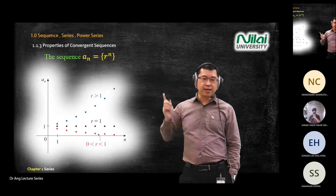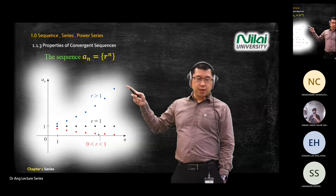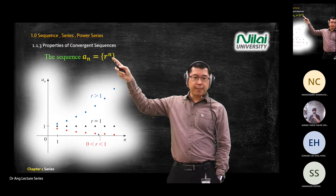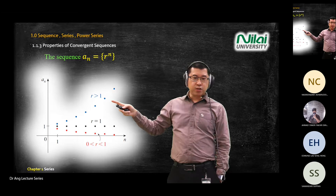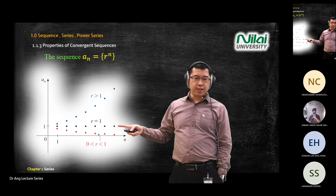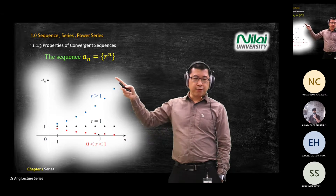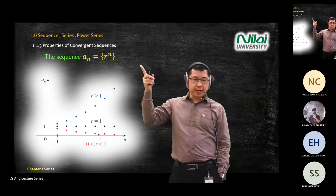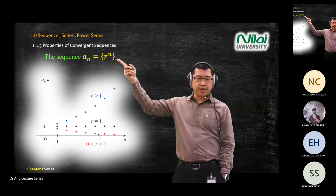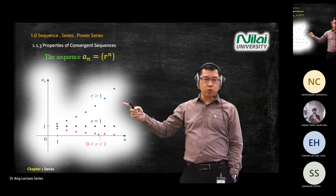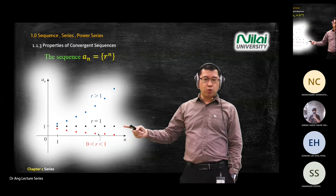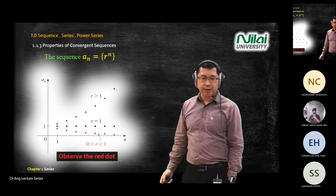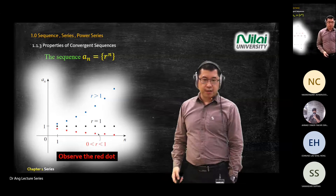Be careful with r^n sequences — you have a zone of convergence and a zone of divergence. If r equals one or r is between zero and one, you get convergence. If r is greater than one, you get divergence. The data keeps increasing and never reaches a stable value.